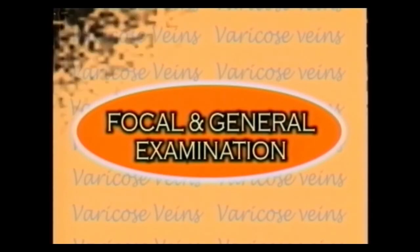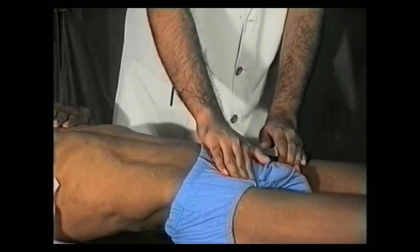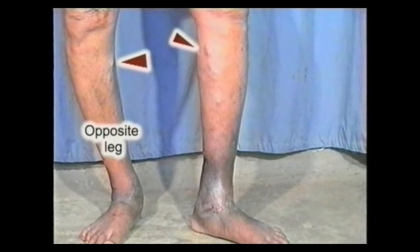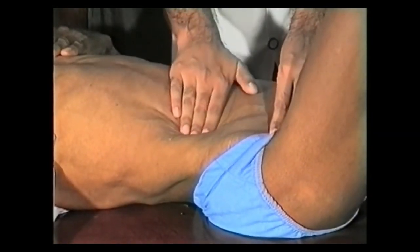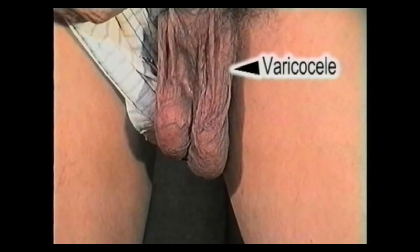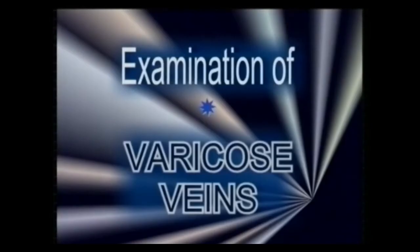Next, palpate the inguinal lymph nodes, which may be enlarged with varicose ulcers and deep vein thrombosis. Examine the opposite leg for varicose veins. Palpate the abdomen for any lump pressing on the pelvic veins. Examine the scrotum in standing position for varicocele and testicular tumor, and perform proctoscopy to rule out coexisting hemorrhoids. This completes the clinical examination of a case of varicose veins.